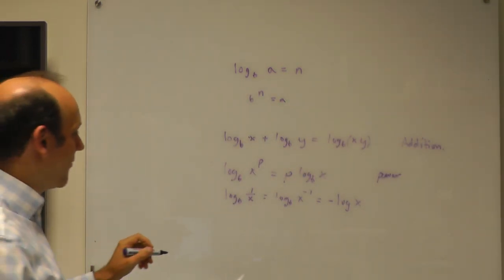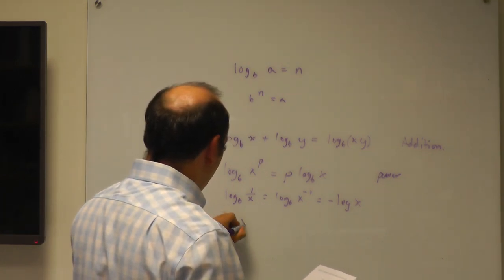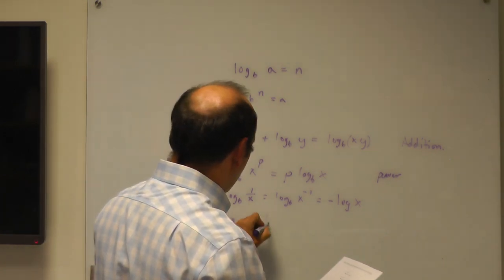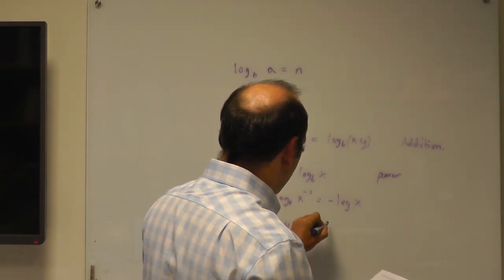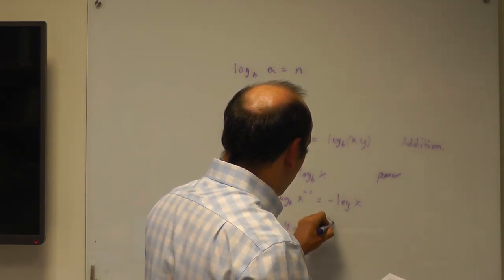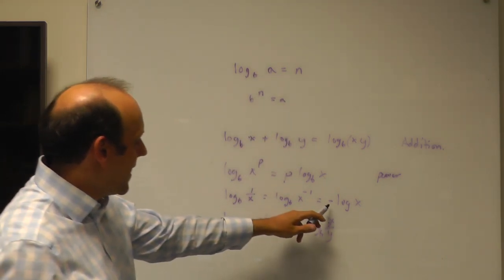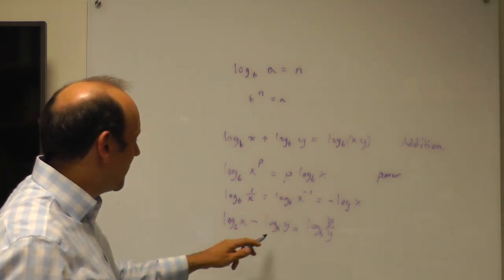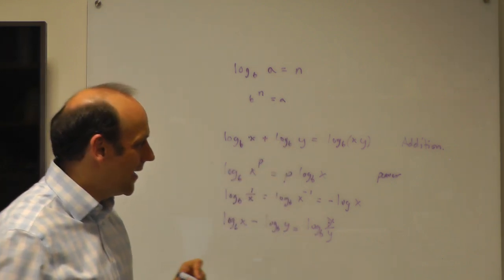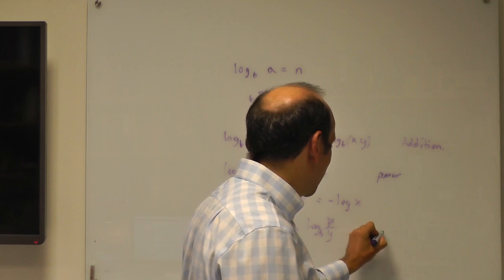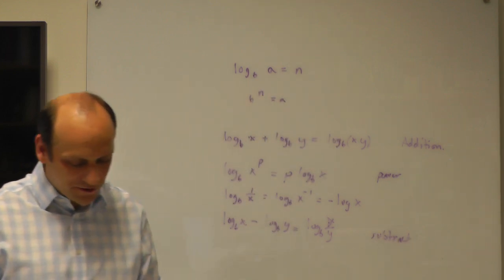Our subtraction rule, therefore, is that log to the base B of X minus log to the base B of Y is equal to log to the base B of X over Y. Because a negative log of Y here is Y to the minus 1, and then we can use the addition rule, and we're there. So that's how they subtract — that's our subtraction rule for logs.